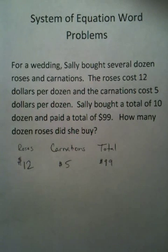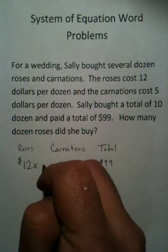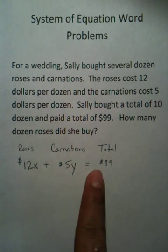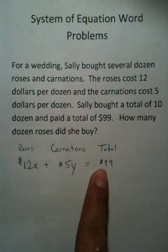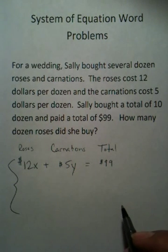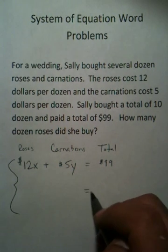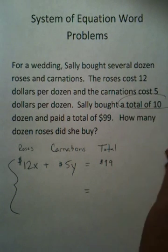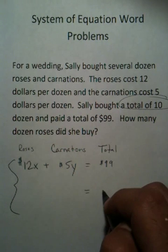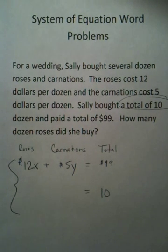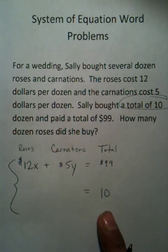Well, with a system of equations, you're basically wanting to use x, y, and make it equal some grand total. Now, where's the other equation? Well, they did give us another piece of information that we could use. They said that we bought a total of ten dozen. Even though that's not an actual money price, it's a total, so a total will go on the other side of the equals.